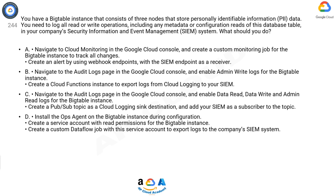Option C: Navigate to the Audit Logs page in the Google Cloud Console and enable data read, data write, and admin read logs for the BigTable instance. Create a Pub/Sub topic as a Cloud Logging sink destination and add your SIEM as a subscriber to the topic. Option D: Install the Ops Agent on the BigTable instance. During configuration, create a service account with read permissions for the BigTable instance, then create a custom Dataflow job with this service account to export logs to the company SIEM system.